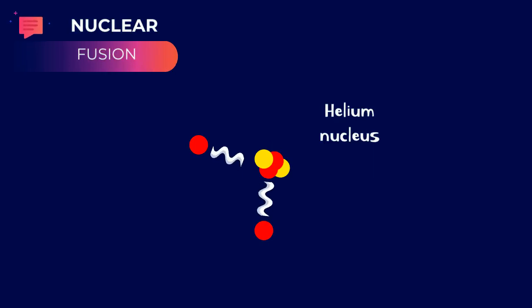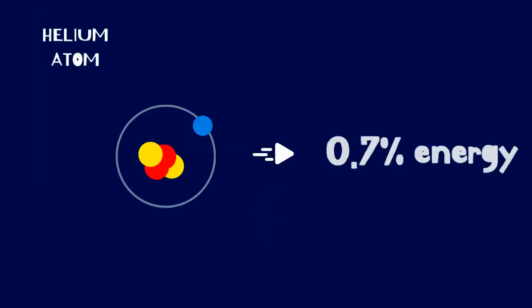This cycle produces energy and heats the plasma in the core. And when billions of atoms fuse like that, it creates a tremendous amount of energy that powers a star.